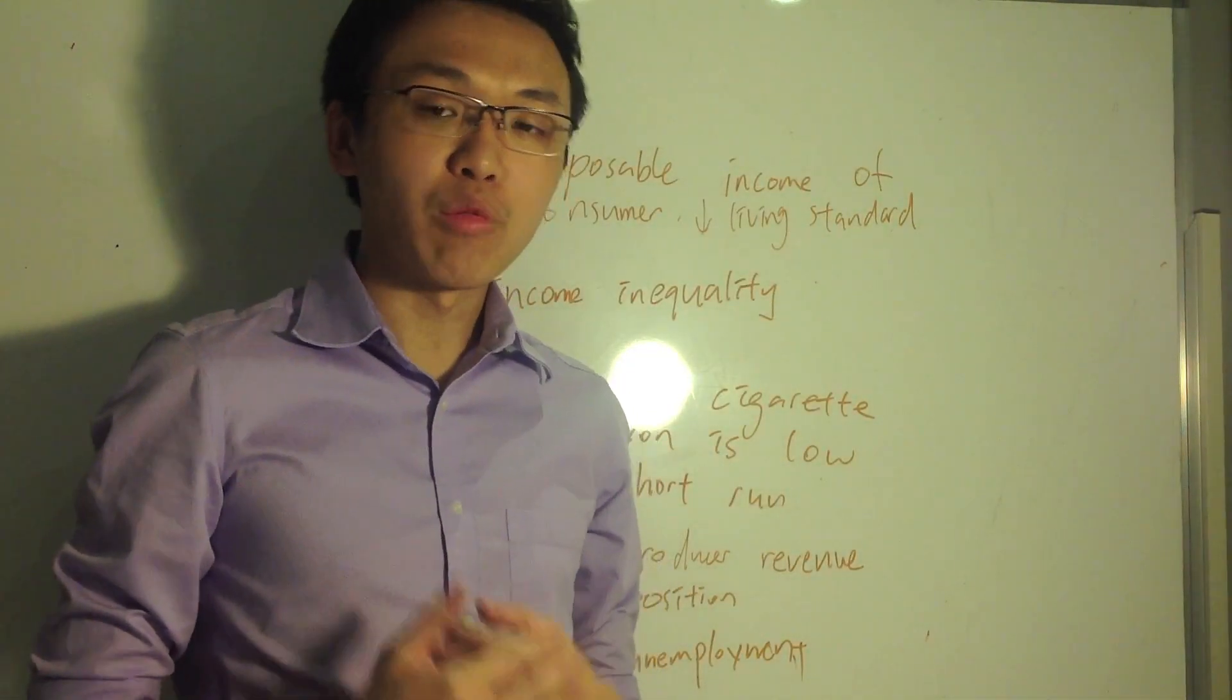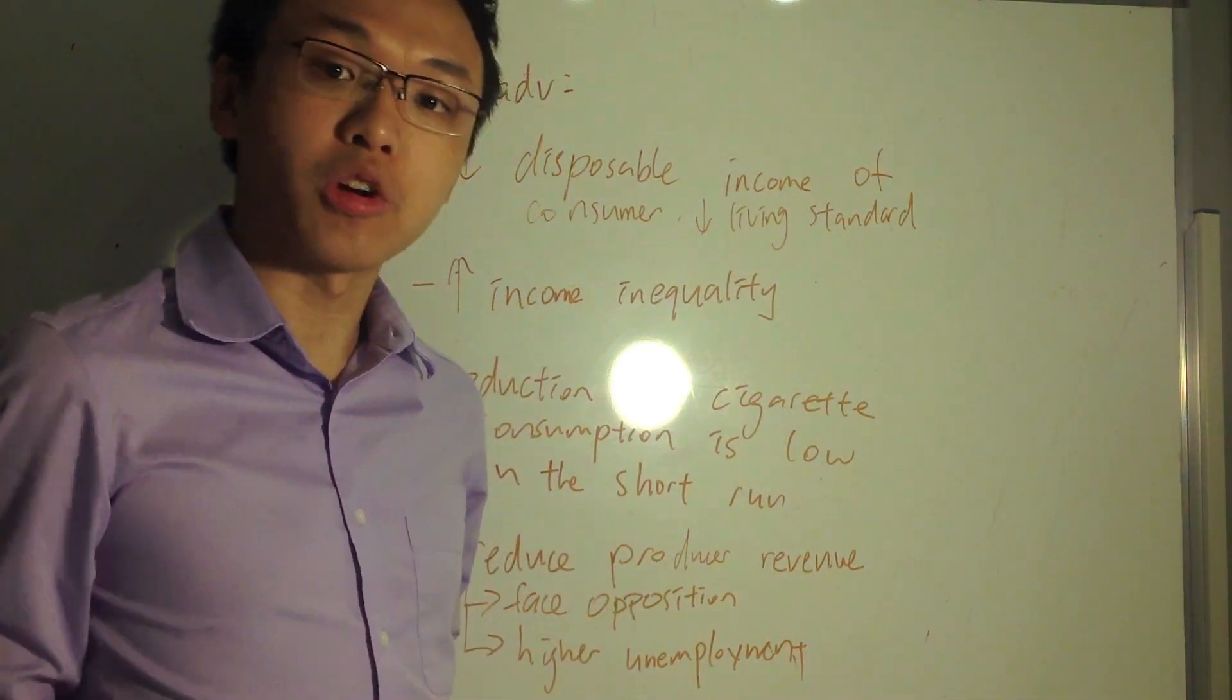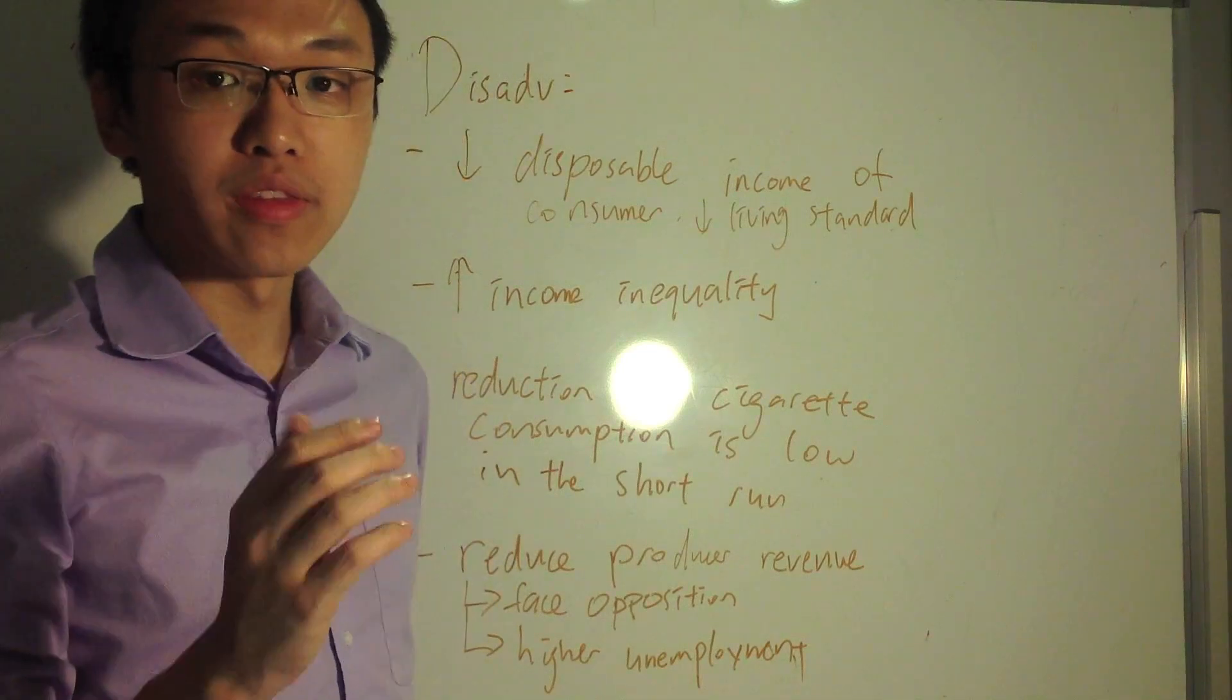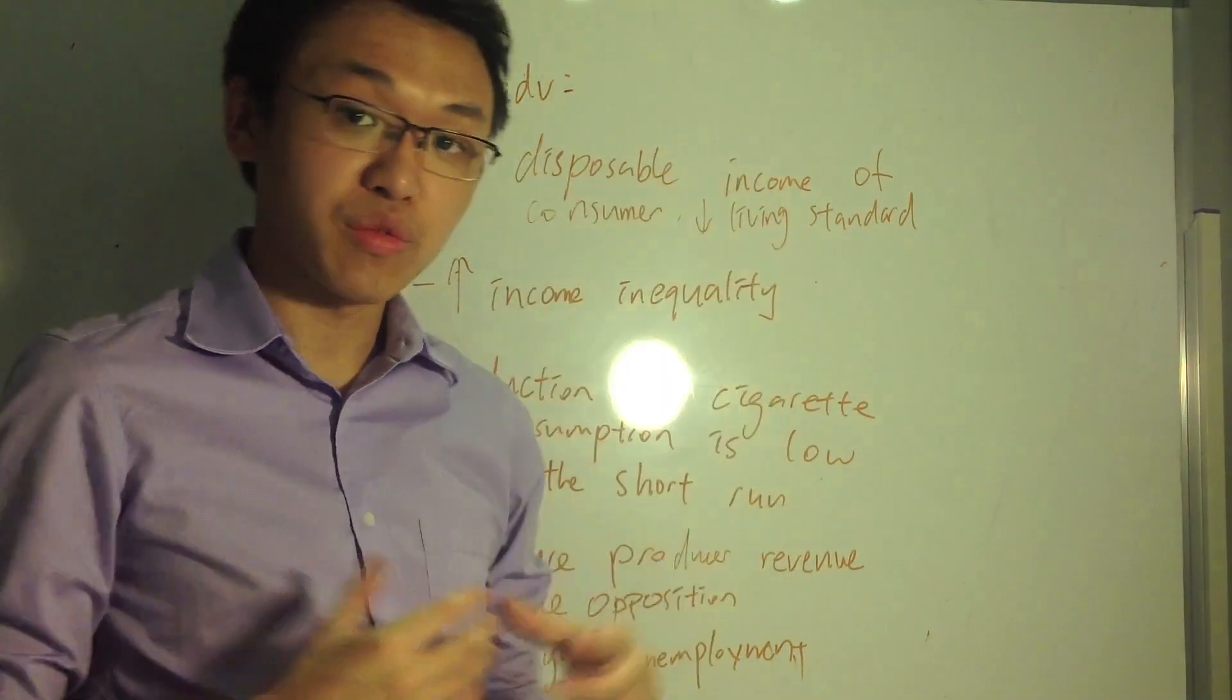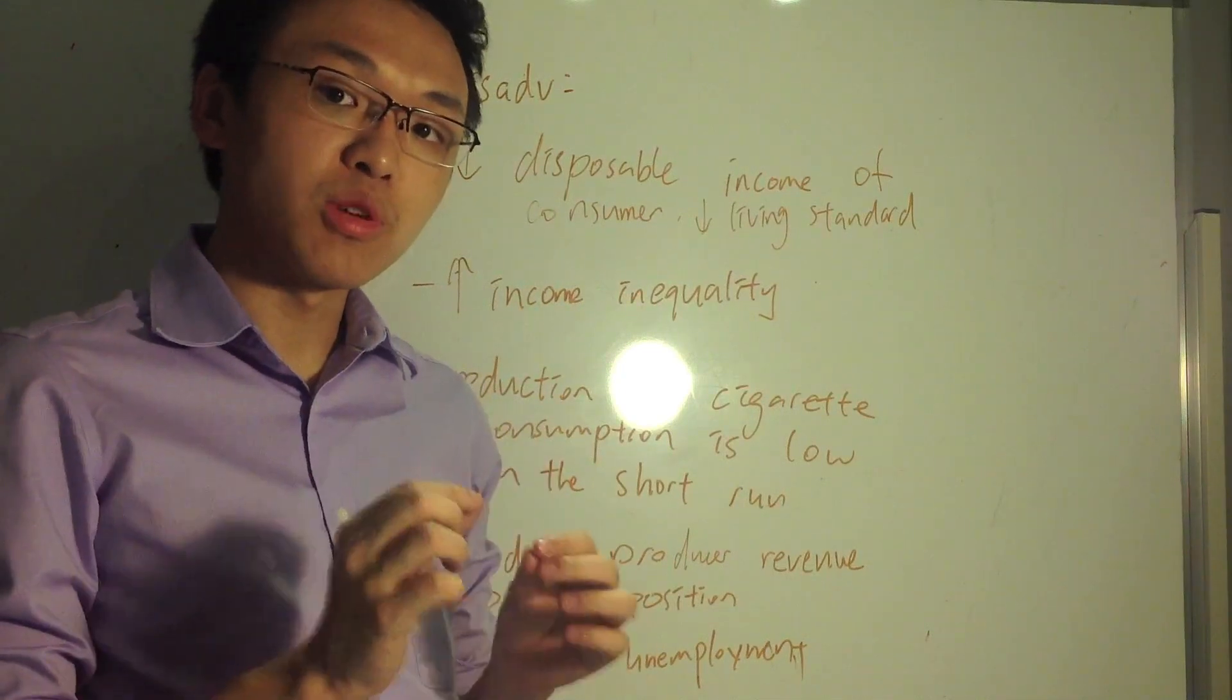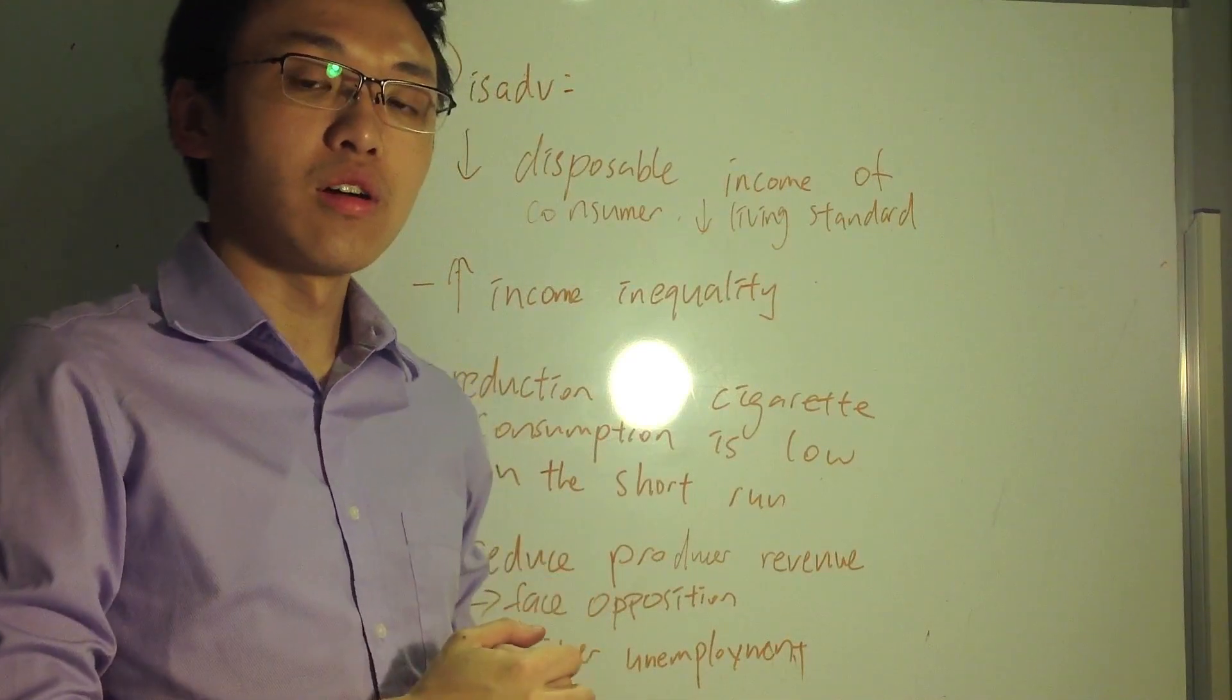So for the next paragraph, what I recommend you to do is look at the disadvantages. So what is the disadvantage of using an indirect tax on cigarettes? So first of all, it reduces the disposable income of consumers because the increase in price is relatively large, as we have established just now. Thus, this would reduce the disposable income of regular smokers, which decreases their living standards.